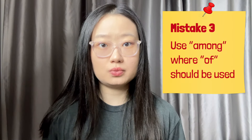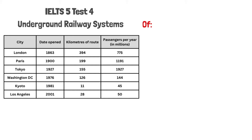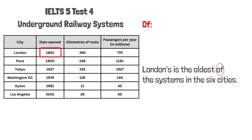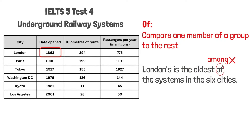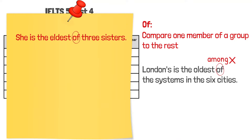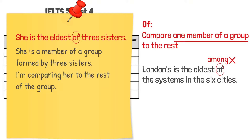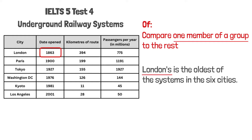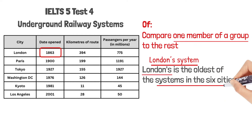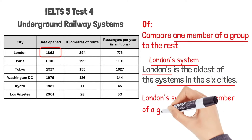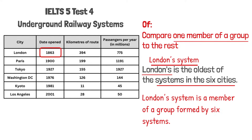Next up, let's talk about the prepositions 'among' and 'of.' Many people use 'among' where 'of' should be used. Let's look at this table — it gives information about the underground railway systems in six cities. When describing London, we could say that London's is the oldest of the systems in the six cities, not 'among.' 'Of' is the preposition we should use when comparing one member of a group to the rest. For example, 'she's the eldest of three sisters' — she's a member of a group formed by three sisters. In this sentence, London's system is a member of a group formed by six systems, and being part of a group always uses 'of' or 'out of.' Out of also works, but don't use 'among.'